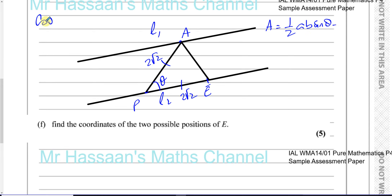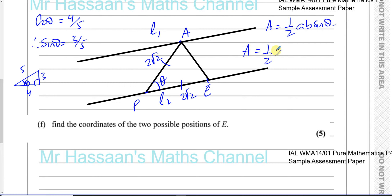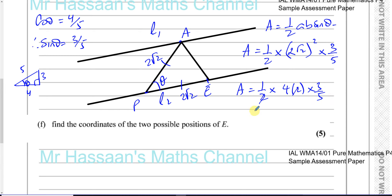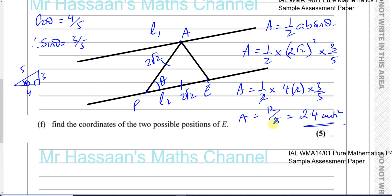We know cos θ = 4/5, so by a right-angled triangle (Pythagorean triple 3-4-5), sin θ = 3/5. The area = ½ × (2√2) × (2√2) × (3/5) = ½ × 8 × (3/5) = 12/5, which equals 2 and 2/5, or 2.4 square units.